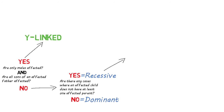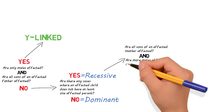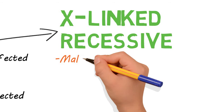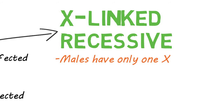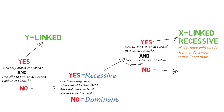Moving down the recessive line, we need to ask two more questions: are all the sons of an affected mother affected, and are more males affected in general? If yes, then it is X-linked recessive, meaning it's attached to the X chromosome. Since males have only one X chromosome, they are more likely to show any disorder on that X chromosome, whereas females have two Xs, so one good copy can mask a mutated one. Also, males always receive their X chromosome from their mother, so if she is affected, she will have two X chromosomes with the mutation, and all sons are guaranteed to inherit it. If the answer is no, then it is autosomal recessive by default — males and females are affected evenly, and affected mothers have unaffected sons.